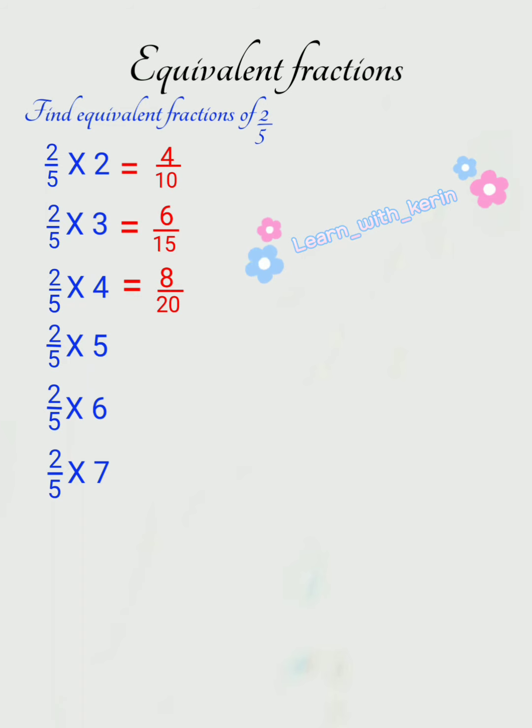Next, we will multiply 2 by 5 with 5. 2 5's are 10, 5 5's are 25. So, our fourth equivalent fraction is 10 by 25.